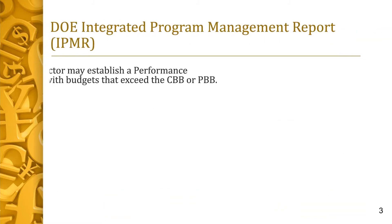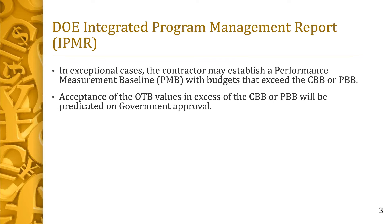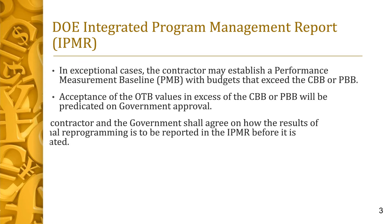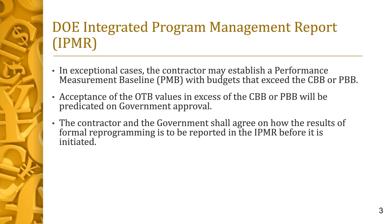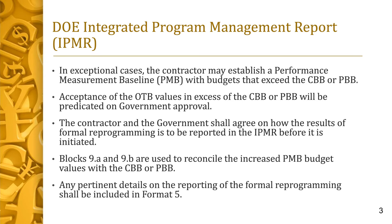The OTB is also part of the reporting requirements required in the IPMR. An OTB is established under exceptional cases and requires government approval. Before this replanning is initiated, the contractor and the government need to agree on how the results will be reported in the IPMR and agree to the values. The IPMR blocks 9A and 9B are used to reconcile the increased budget values to the CBB or PBB. Format 5 is used for the contractor to add any pertinent details of the formal reprogramming.